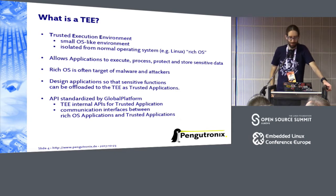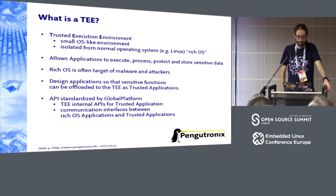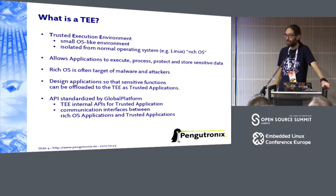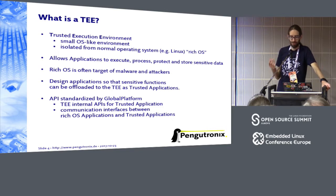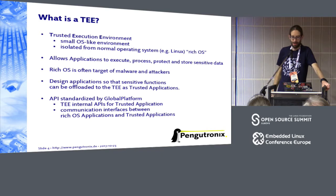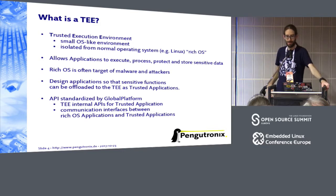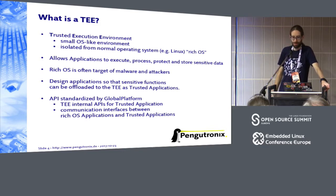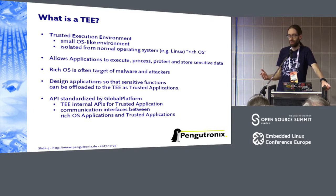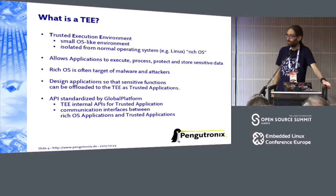What is a TEE — a Trusted Execution Environment for short? It's a method, or an API definition, to split your application into two parts: one part that runs normally under Linux, and another part that runs in a different, isolated environment — and that is what we call a trusted execution environment. This application in the TEE can be in a different chip, a coprocessor, or, as we will see, on the same ARM chip using TrustZone.